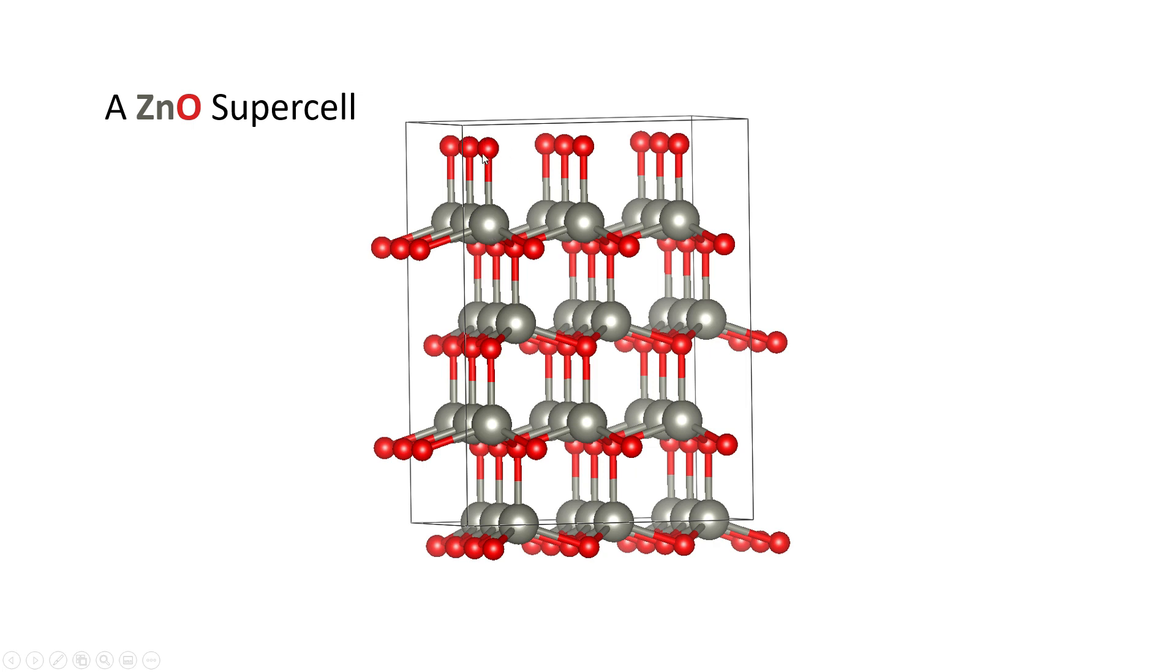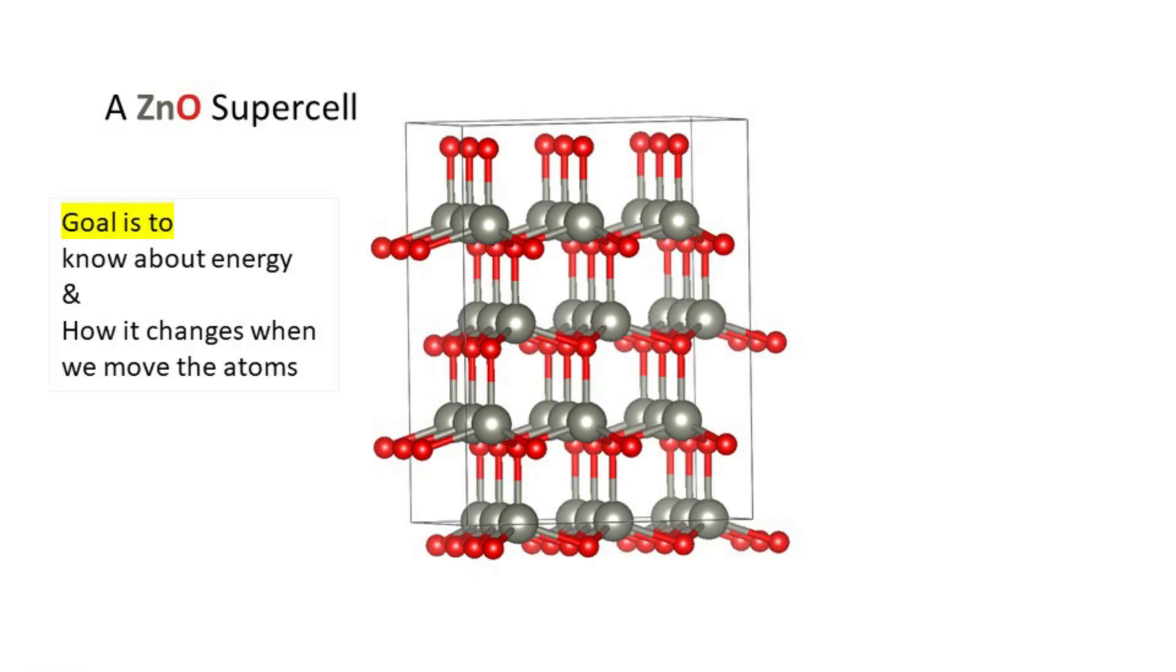For each atom, the first most fundamental thing we would like to know about is their energy. The second most important thing we would like to know is how the energy of this atom is going to change when we apply any external perturbation to it, like if the atom gets displaced from its original position - how the energy of the atom is going to change.